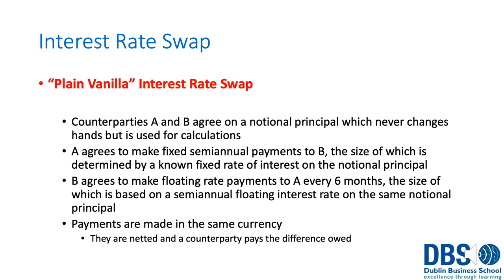The interest rate swap is the simplest type of swap, sometimes called the plain vanilla interest rate swap. Two counterparties, A and B, agree on a notional principal — which never actually changes hands but is used for calculations. A agrees to make fixed semi-annual payments to B, determined by a known fixed interest rate on the notional principal — for example, 5% on $10 million would mean payments of $500,000. B agrees to make a floating rate payment every six months based on the semi-annual floating interest rate — something like LIBOR plus a percentage — which changes from period to period.